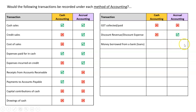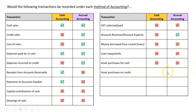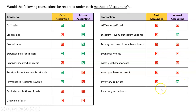Money borrowed from the bank is never a revenue under either system, and a loan repayment is never an expense under either system. Buying an asset for cash or on credit is never recorded as an expense under either method. An inventory gain or loss involves no cash changing hands, so it is never recorded under cash accounting, but under accrual accounting it would be recorded as a revenue or expense. An inventory write-down similarly has no cash flow so it is excluded from cash accounting but included under accrual accounting.